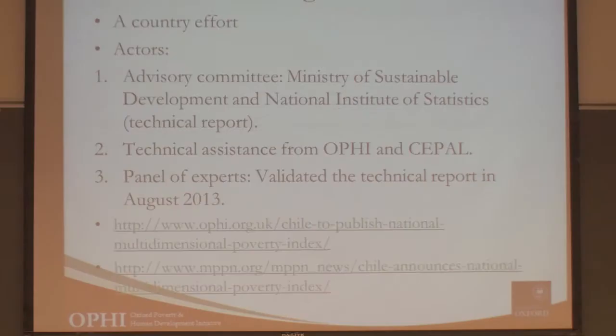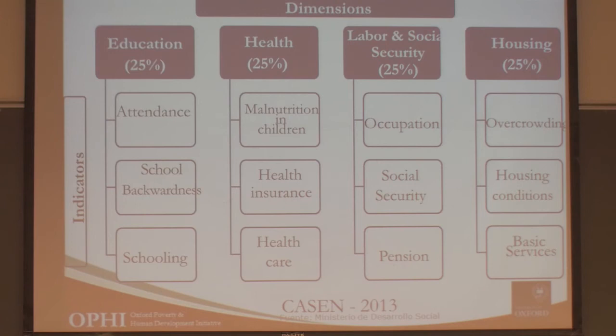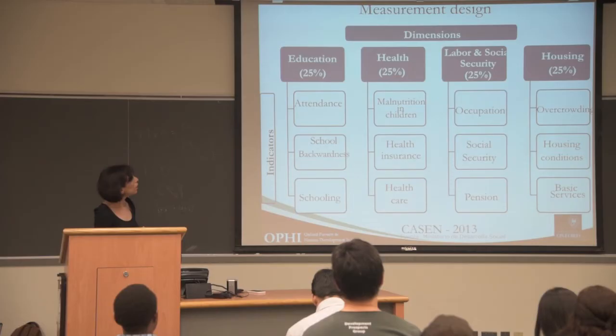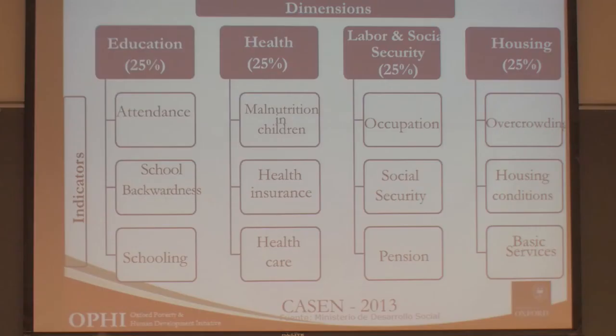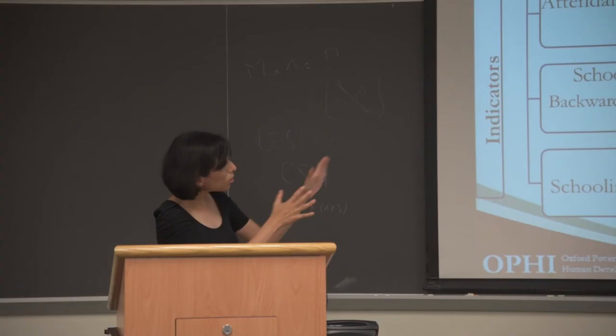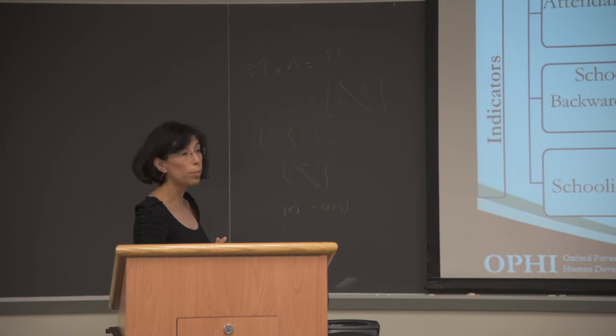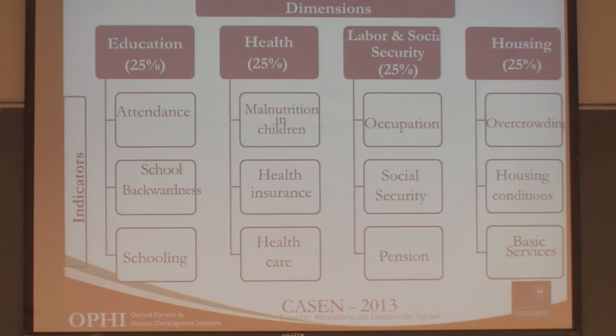Looking at Chile's measurement design: there are four dimensions — education, health, labour and social security, and housing — each equally weighted at 25%. Within each dimension there are several indicators. For education: attendance, school backwardness, and schooling. For health: malnutrition in children, health insurance, and healthcare. For labour and social security: occupation, social security, and pension. For housing: overcrowding, housing conditions, and basic services. Each of the indicators is equally weighted within the dimension at 8.3%.